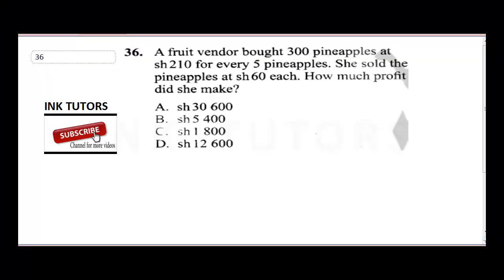Welcome back to the tutorial. Question 36 says: a fruit vendor bought 300 pineapples at 210 shillings for every five pineapples, and she sold the pineapples at 60 shillings each. How much profit did she make? The first thing to understand is that the total is 300 pineapples.